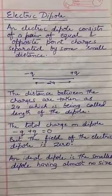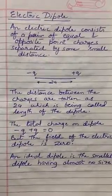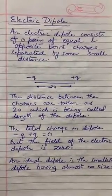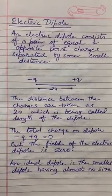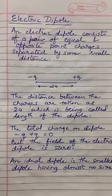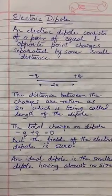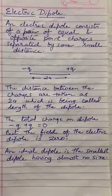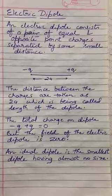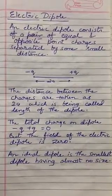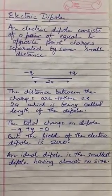Now, there is a question: if the magnitudes are the same and the direction is different, then the net charge will be 0. Yes, that is correct. The net charge will be equal to 0, but the net field will never be equal to 0 in this case.